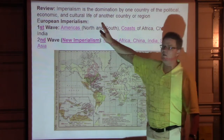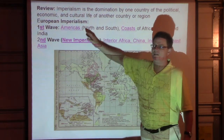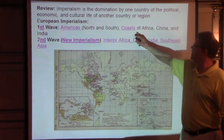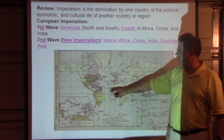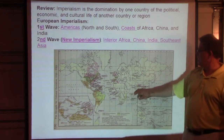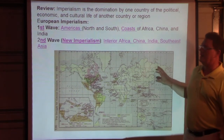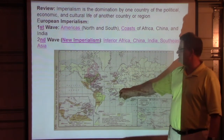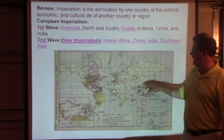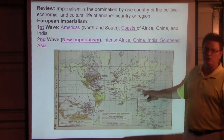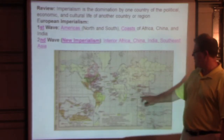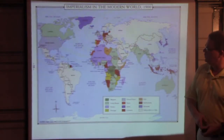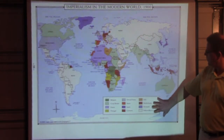The first wave is going to be the Americas, north and south — the Spanish, the French, the English. Then it's going to go to the coast of Africa, and then it's going to happen in China. The second wave of new or neo-imperialism is going to get the interior of Africa, China, India, and South Asia added to the mix, as well as Southeast Asia.